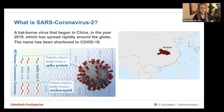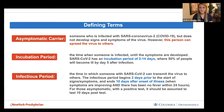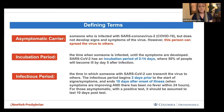SARS coronavirus 2 is a bat-borne virus that began in China in 2019 and spread the globe rapidly, becoming a pandemic. An asymptomatic carrier is someone who is infected with SARS coronavirus 2 but does not develop signs and symptoms; however, this person can spread the virus to others. Dr. Fauci stated that the latest data shows 40 to 45 percent of infectious carriers are asymptomatic — a large proportion of disease spread.